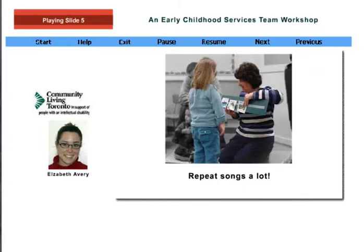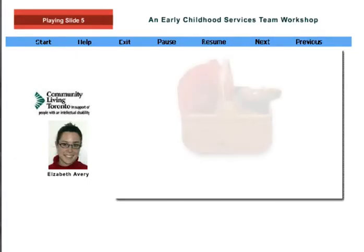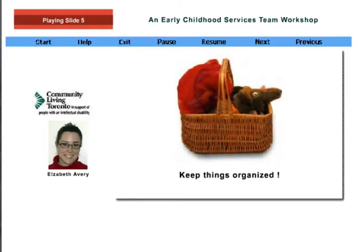Have a small pool of songs, maybe ten altogether from month to month. One or two of these songs can support aspects of your curriculum, such as colors and counting. Keep things organized by making a music box with props, words to songs, visual cues, and picture symbols — you'll learn more about these later in the workshop. Separate any musical instruments from this box as they may not be used each time.